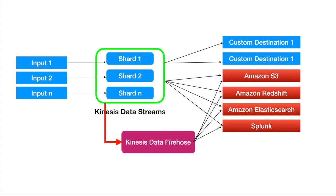So the main point is: once Kinesis Data Streams finishes adding and temporarily storing log data, Kinesis Data Firehose can then read that data out of the stream and forward it to one of the four available destinations. Hopefully this gives you a clearer idea of the differences between Kinesis Data Streams and Kinesis Data Firehose. For more detail, you can always refer to the AWS documentation. Thank you.